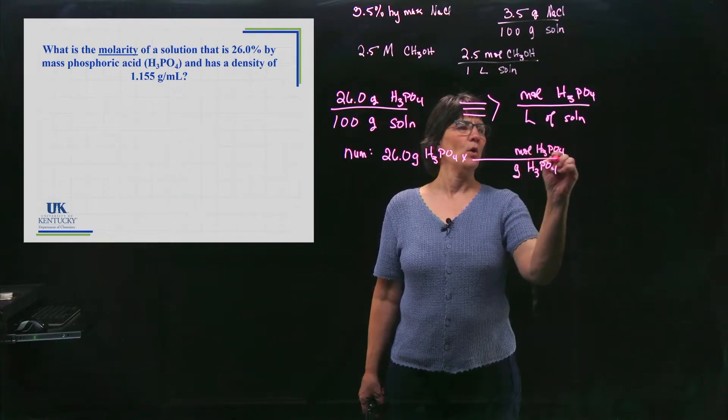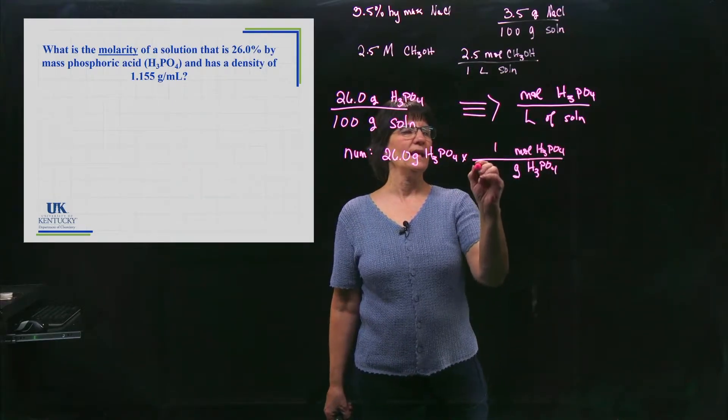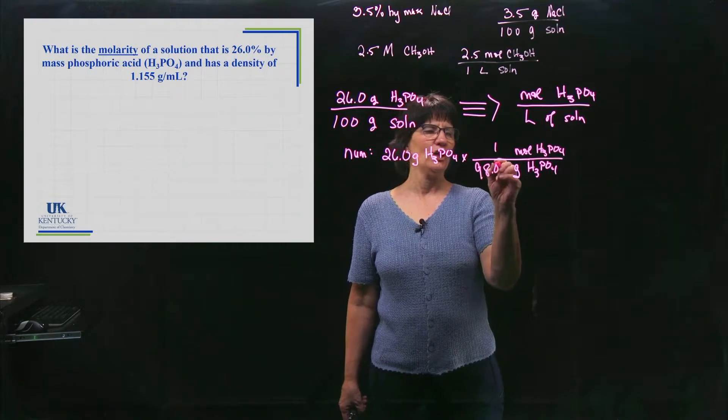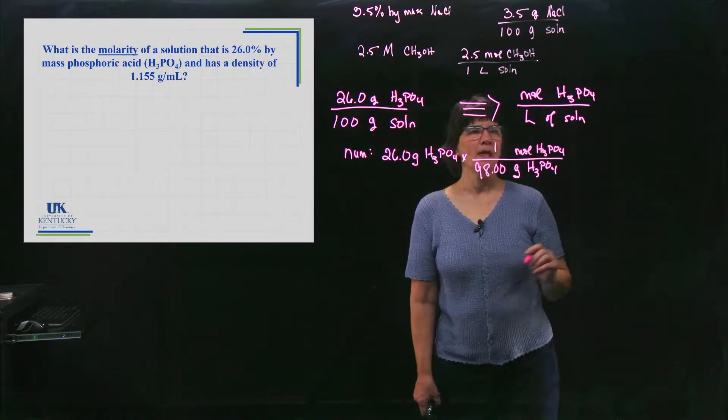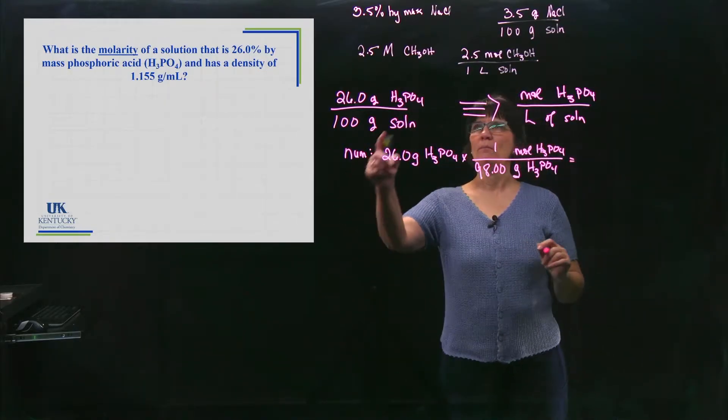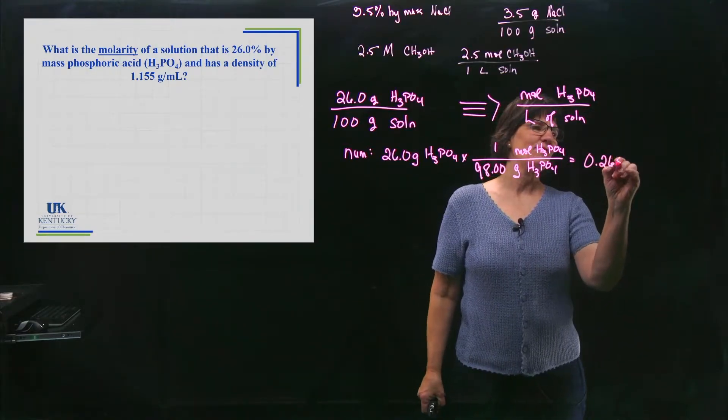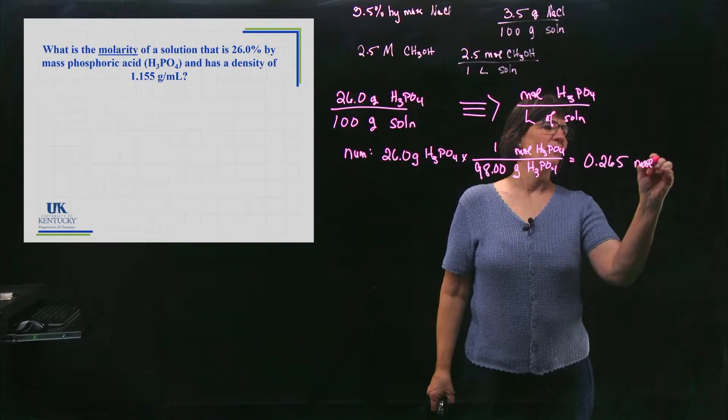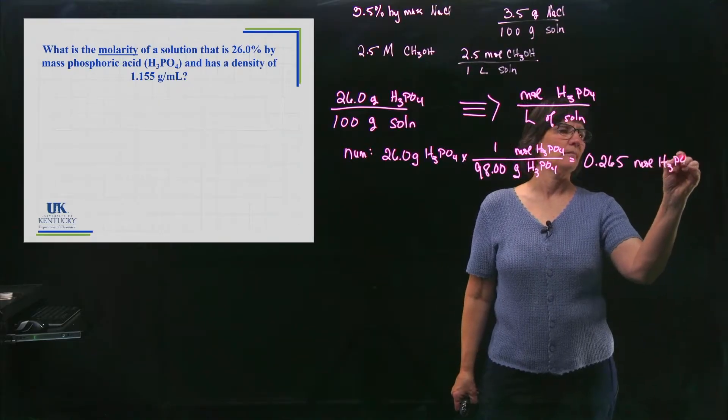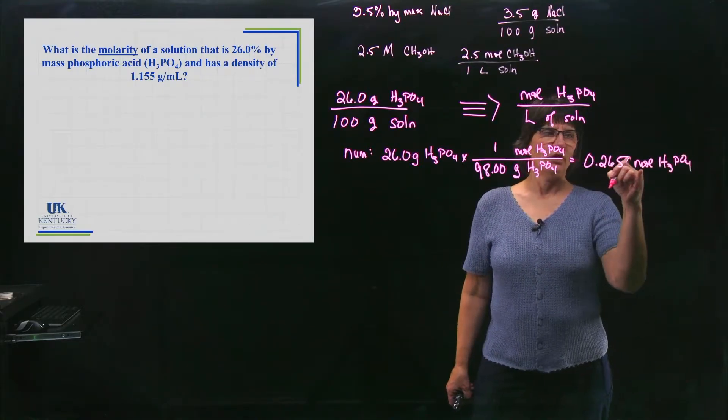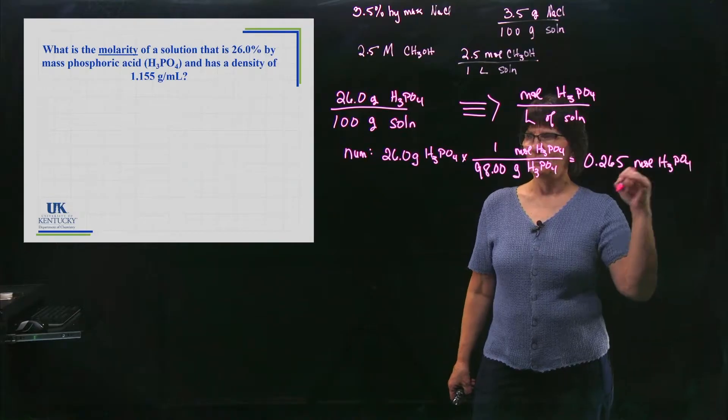If I go and look up the molar mass of phosphoric acid, it's 98 grams in a mole. And I am left now working my numerator to where I'm trying to get my numerator. And I have 0.265 moles of H3PO4. Notice a number, a unit, and a substance.